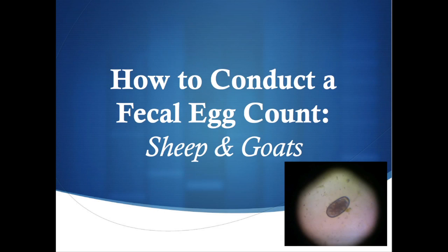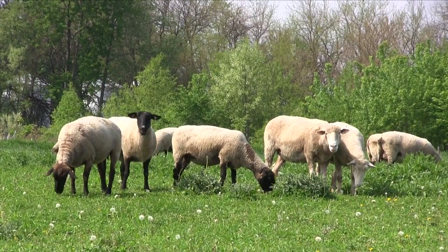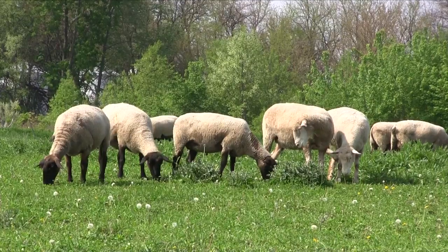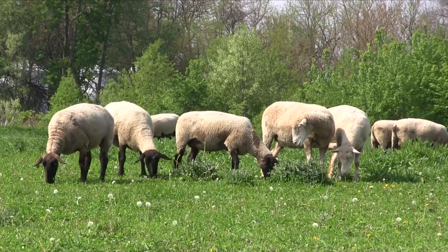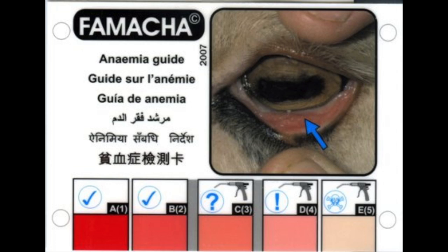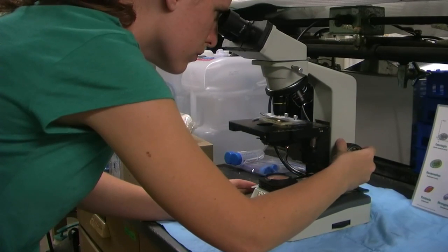Internal parasitism in sheep and goats is one of the biggest health concerns for producers. Most goat and sheep breeders use a number of methods to control parasites, including anthelmintics or dewormers. But how do you accurately tell if the anthelmintic is doing its job? Body condition scoring and the FAMACHA test are common techniques, but performing a fecal egg count is more precise.